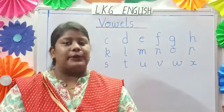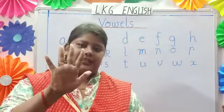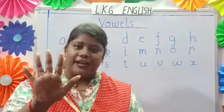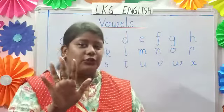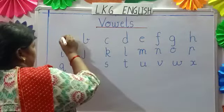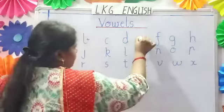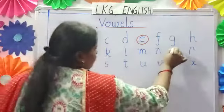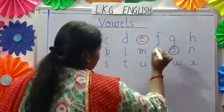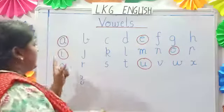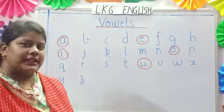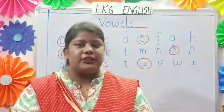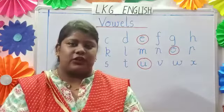And out of 26 letters, 5 letters are very special. How many letters are very special, children? 5 letters. And those are A, E, I, O, U. These are the special letters, and these 5 letters are called vowels. What are they called, children? They are called vowels.